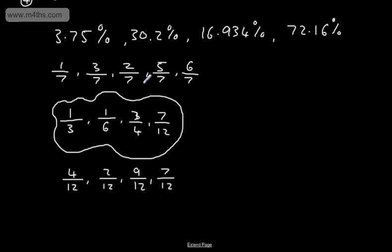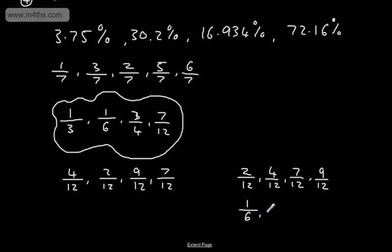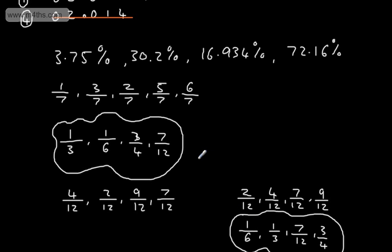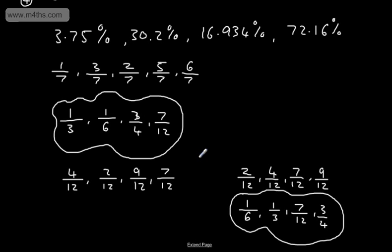At this stage, we simply go back and put these in order. The smallest is 2/12, then 4/12, then 7/12, and finally 9/12. We need to write them back as they were: 2/12 is 1/6 (the smallest), 4/12 is 1/3, 7/12 stays as 7/12, and 9/12 is 3/4. So in ascending order, smallest to largest, our fractions are now ordered. That's looking at ordering fractions when the denominators are different.